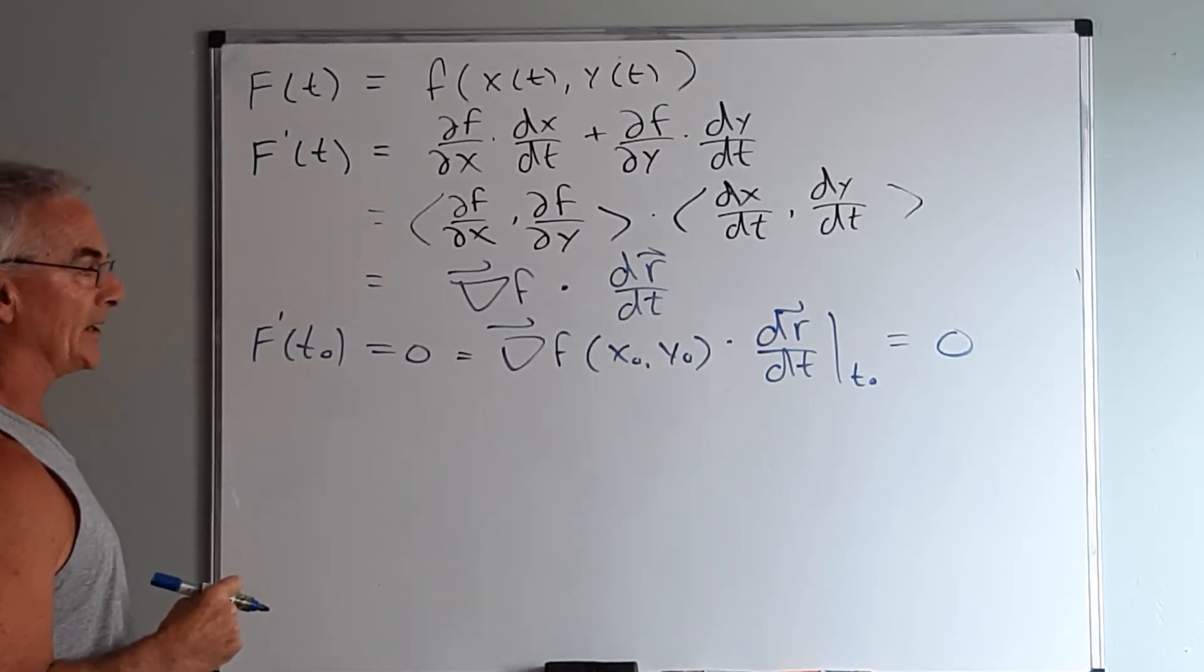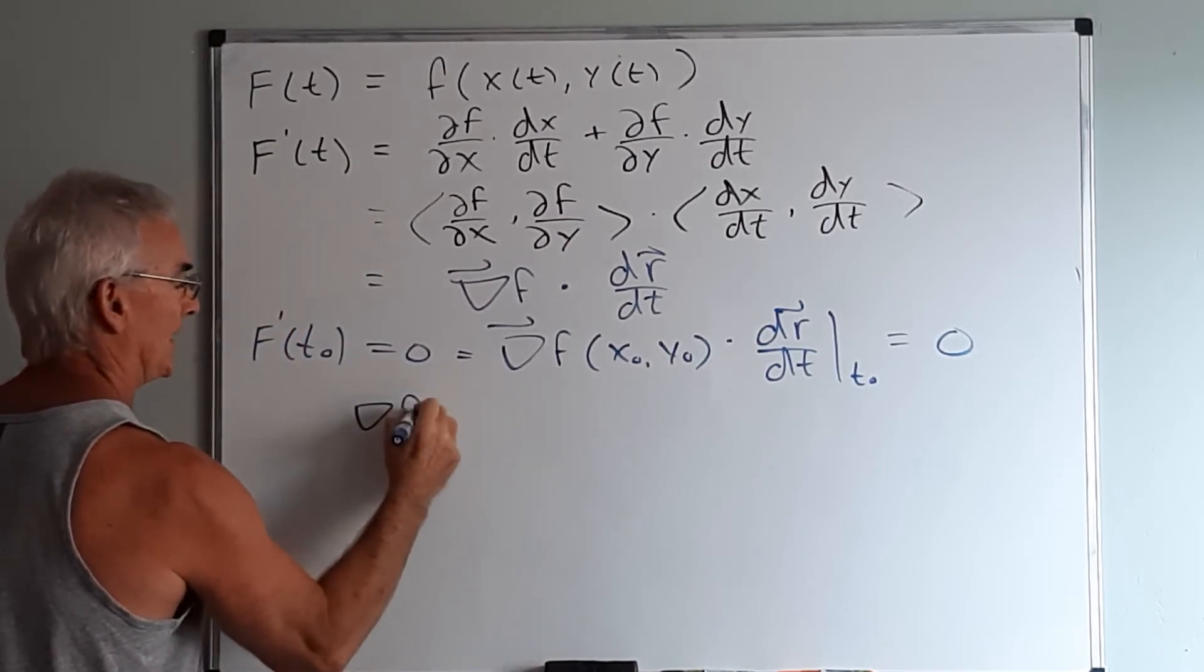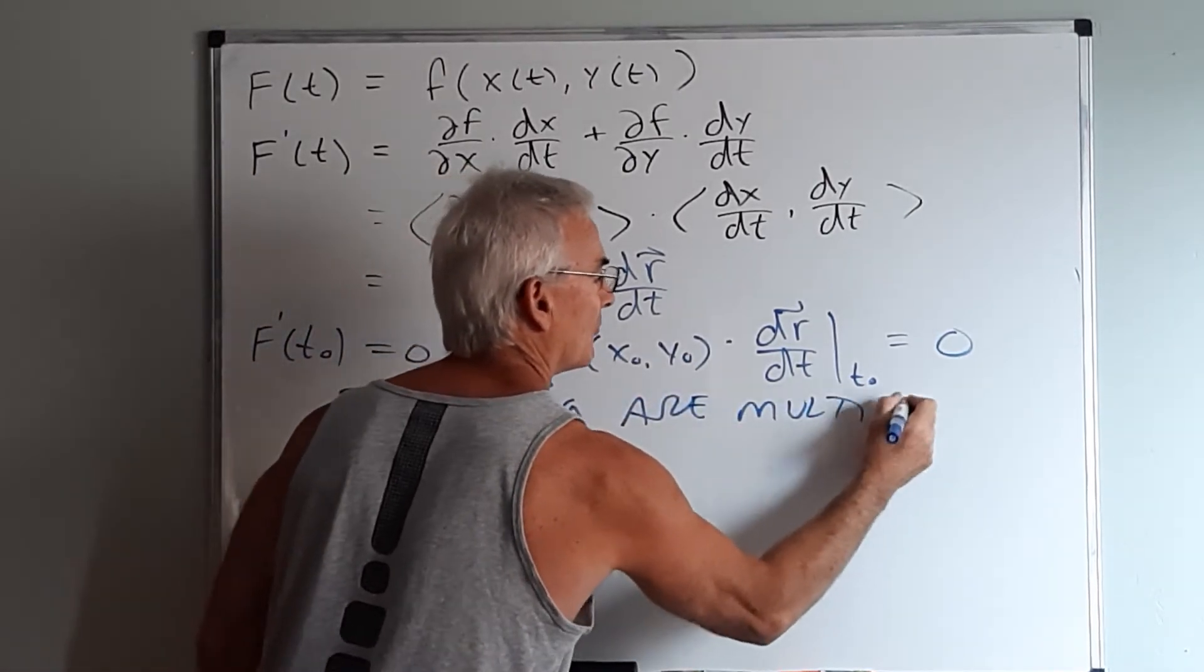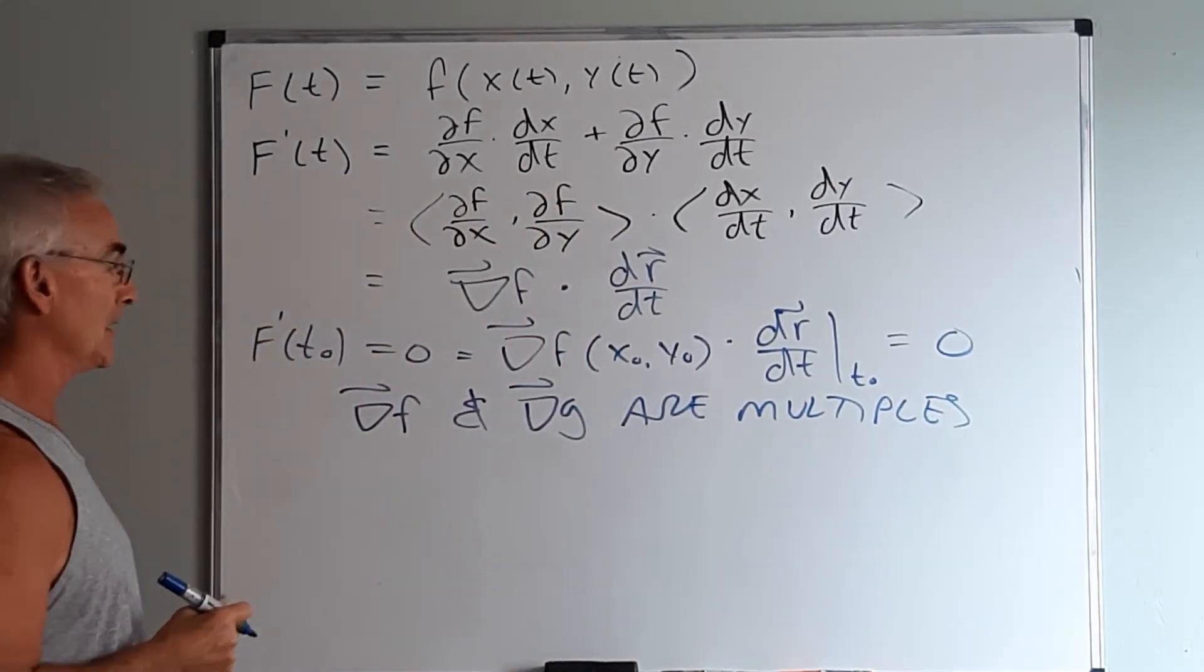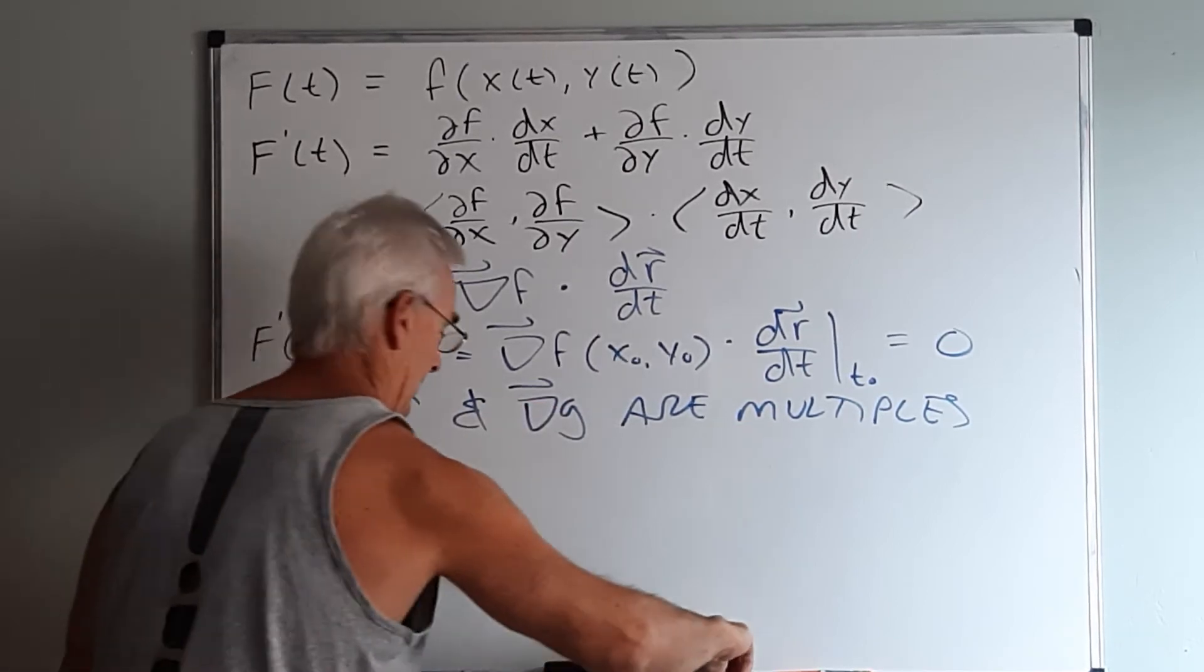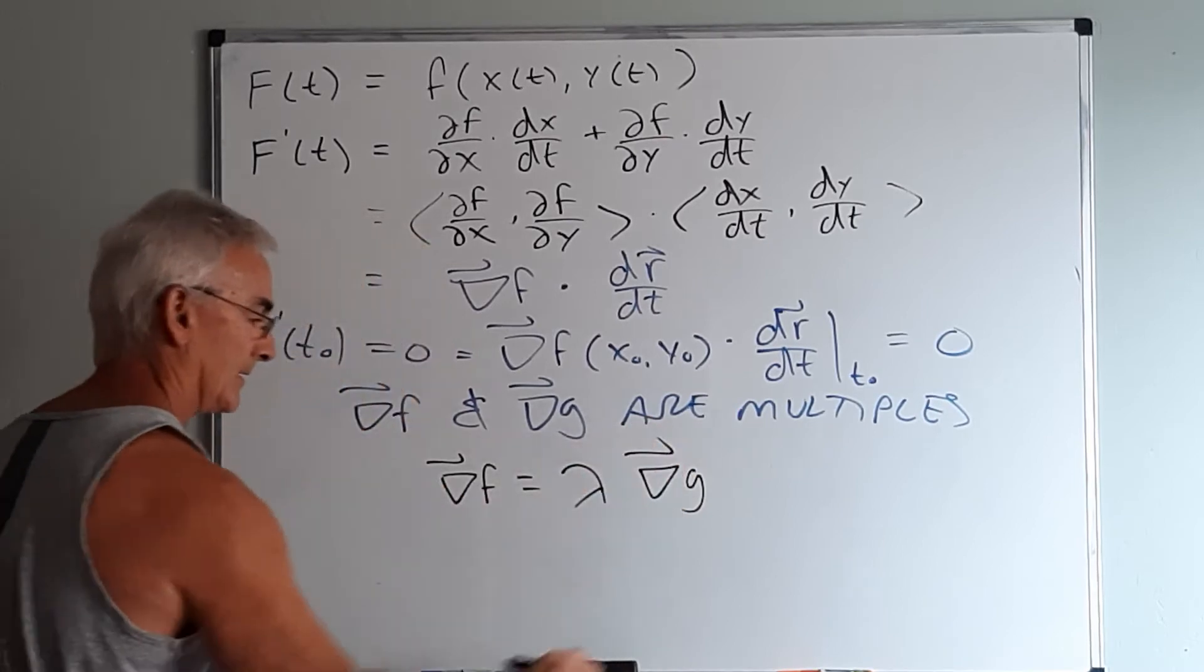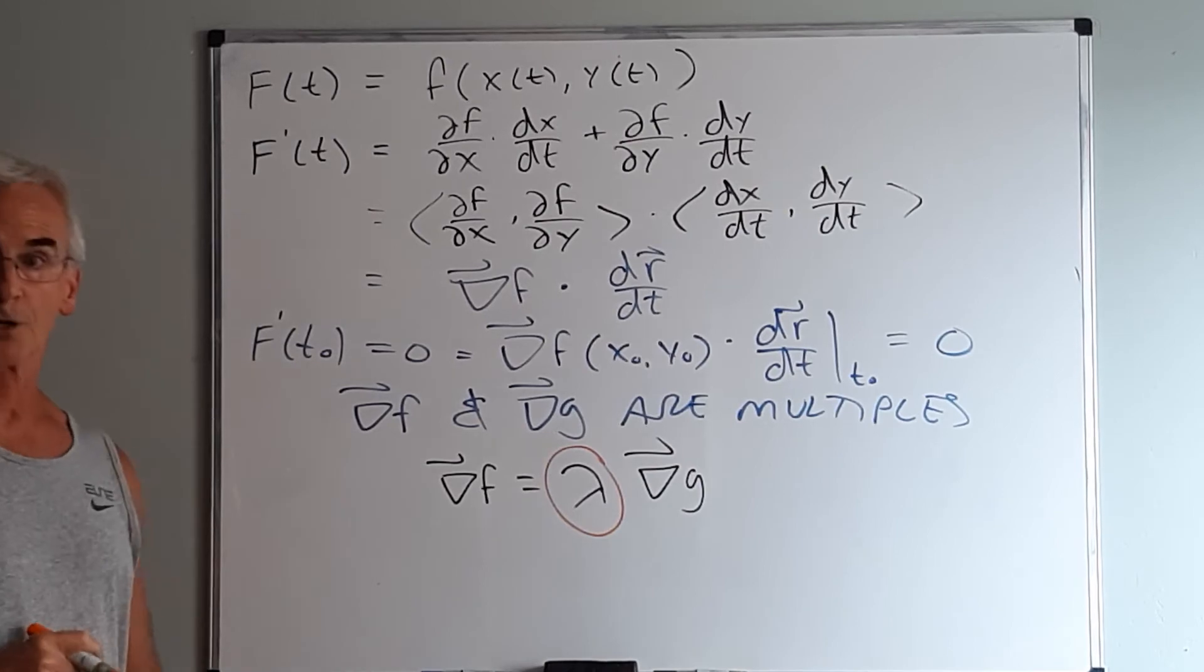But we already know that the gradient of g was orthogonal to this and that result means that the gradient of f and the gradient of g are multiples. And the reason that's so important if they are both orthogonal to the same thing at the same place then they must be multiples of each other and we say then that the gradient of f equals lambda the Greek letter times the gradient of g. Lambda is what we refer to as the Lagrange multiplier. So now we're going to use this to solve maximization minimization problem.